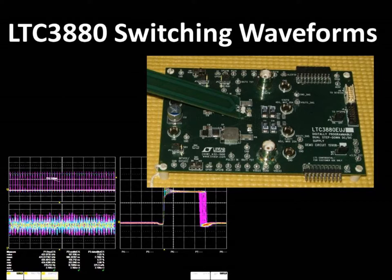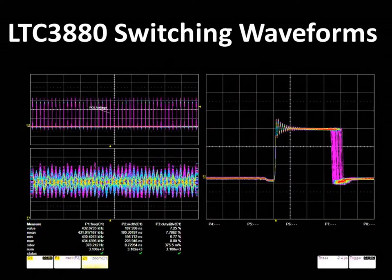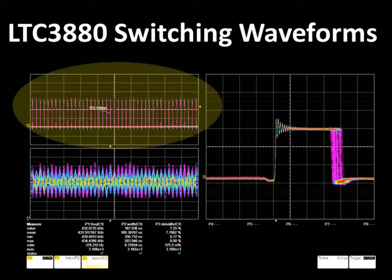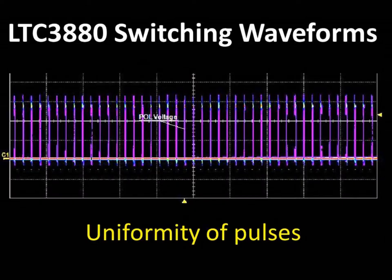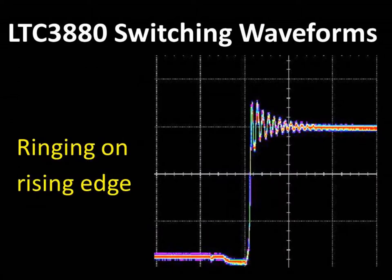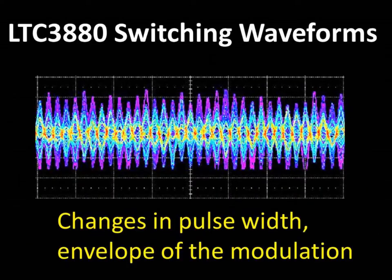We begin by looking at measurements taken on an LTC-3880 demo board, which contains a buck converter based on the LTC-3880 step-down controller IC. In this image, we show measurements of the buck converter switch node waveforms. These measurements are actually three views of the same waveform. In the first view, we show many pulses, so that we can see the uniformity between pulses. In the zoom view, we can see the ringing at the rising edge of the waveform, and in the third view, we are measuring the pulse width versus time, allowing us to see the changes in width and also the envelope of modulation.